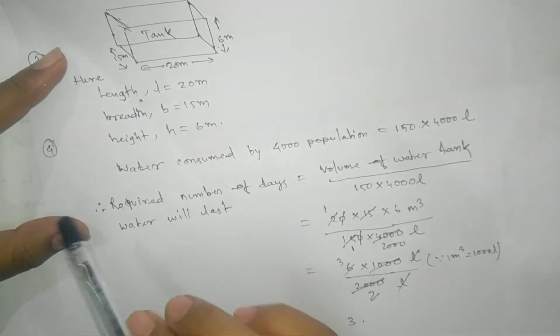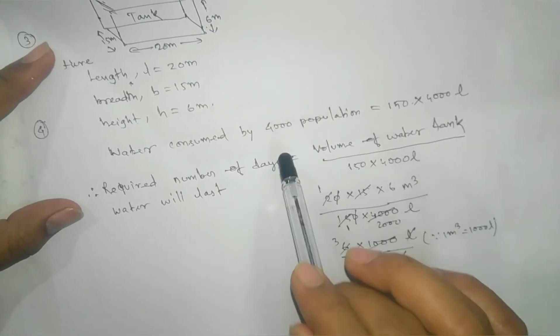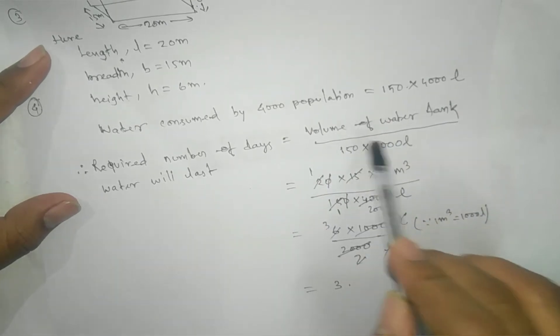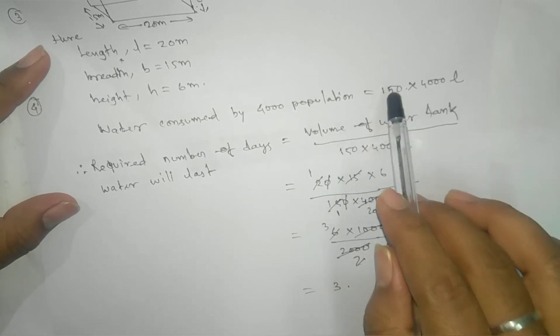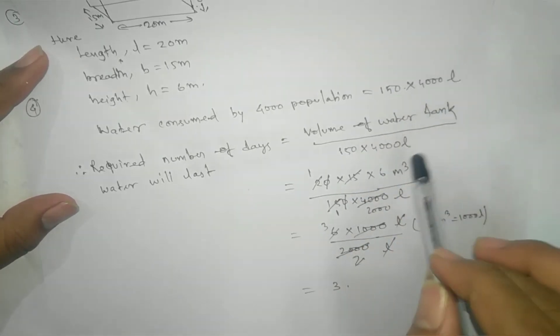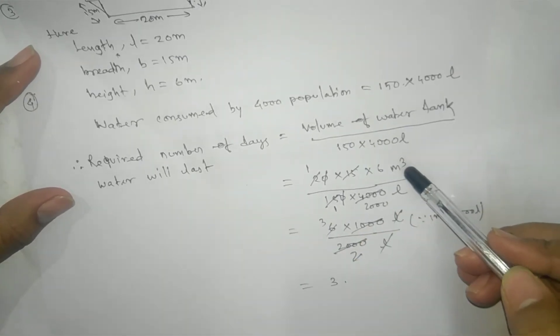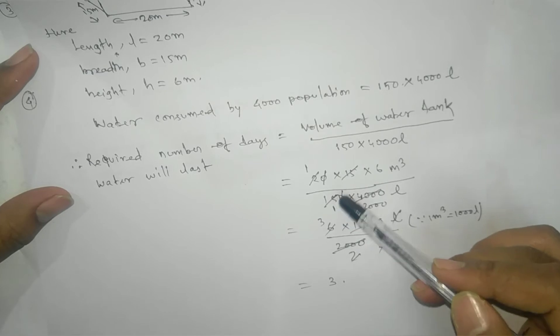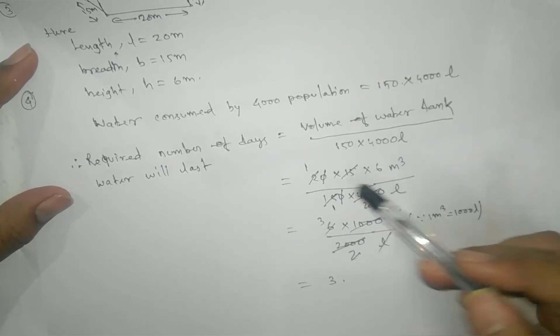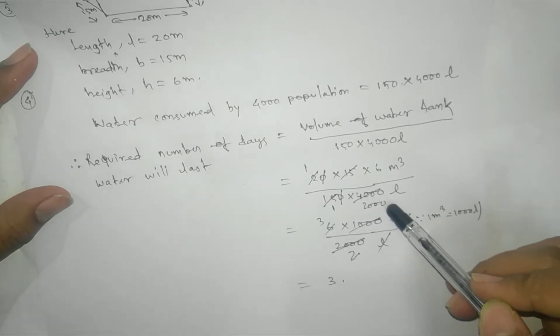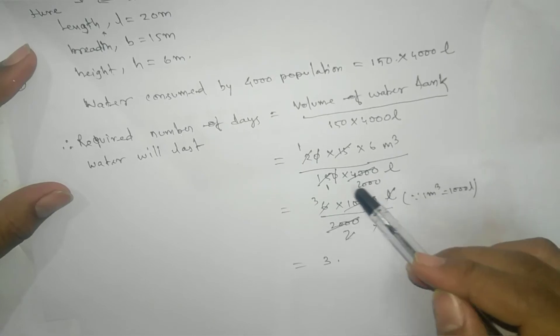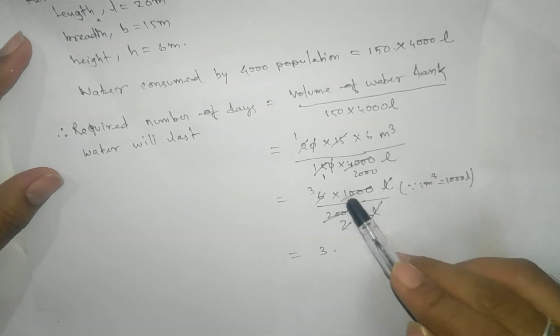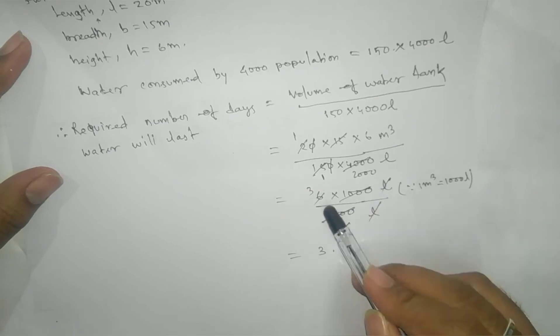Water in the tank will last for how many days? We have one formula: larger divided by smaller volume. Volume of water tank divided by water consumed. This is in liters, but the tank is in meter cube. One meter cube equals 1000 liters.